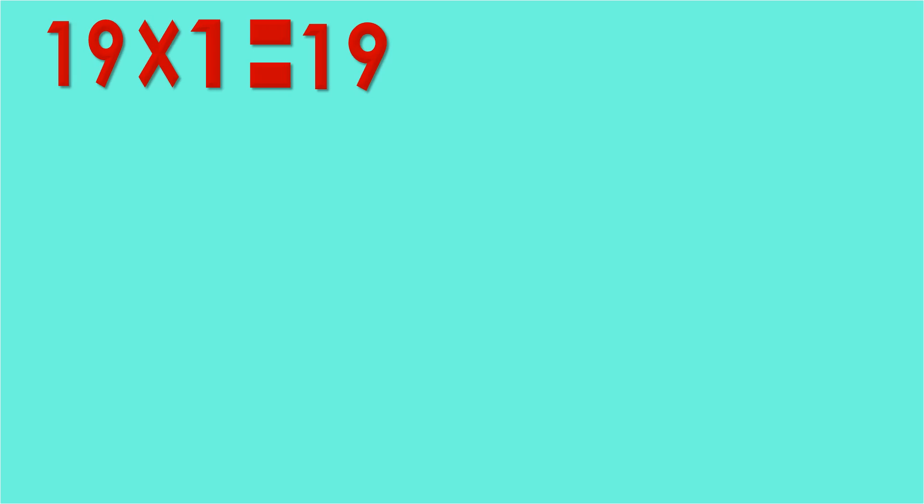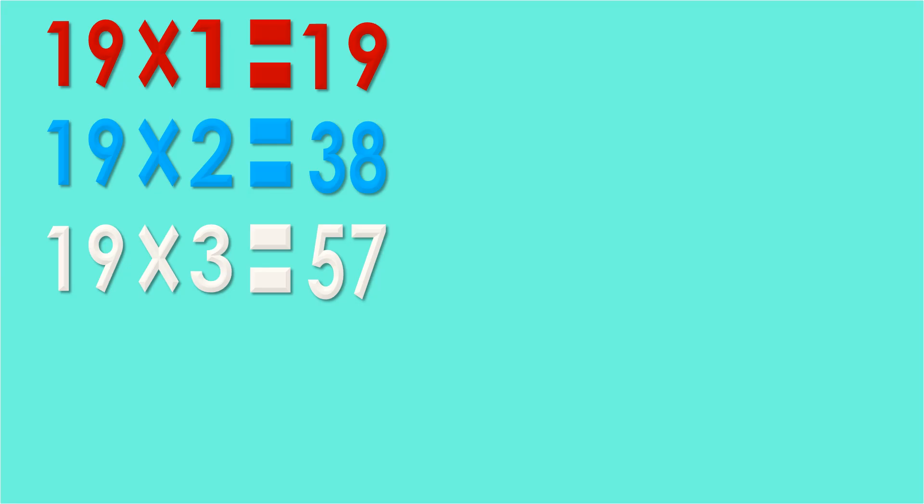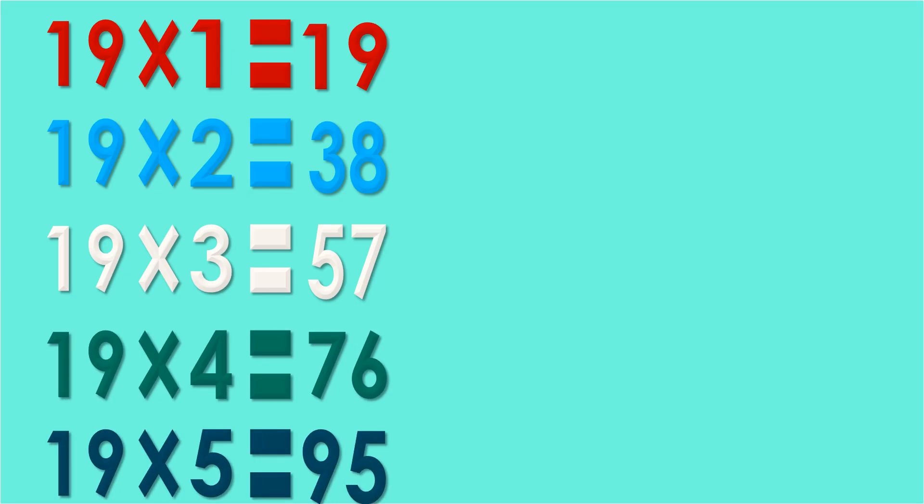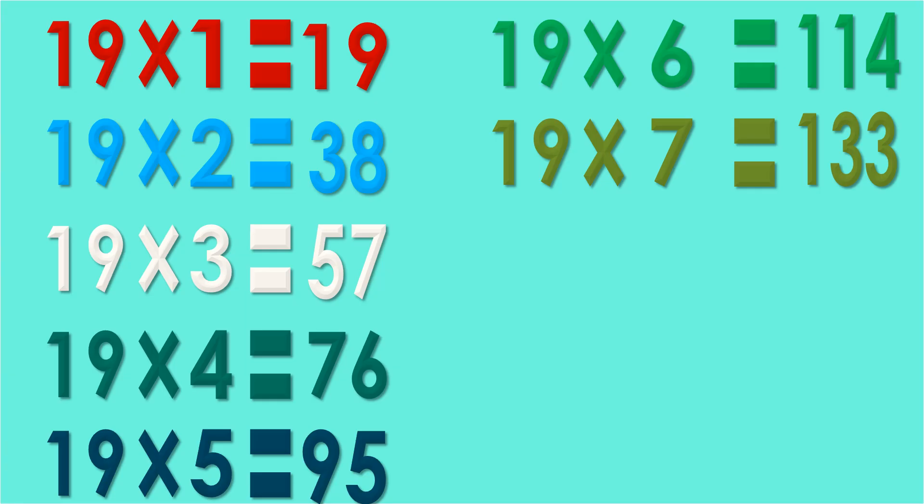19 ones are 19, 19 twos are 38, 19 threes are 57, 19 fours are 76, 19 fives are 95, 19 sixes are 114, 19 sevens are 133, 19 eights are 152.